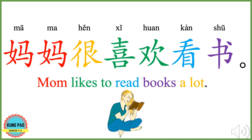妈妈很喜欢看书。 妈妈 means mom. 很 means very or a lot. 喜欢 means like. 看 here means to read. 书 means book. 看书 in English means to read books. 妈妈很喜欢看书 means mom likes to read books a lot.